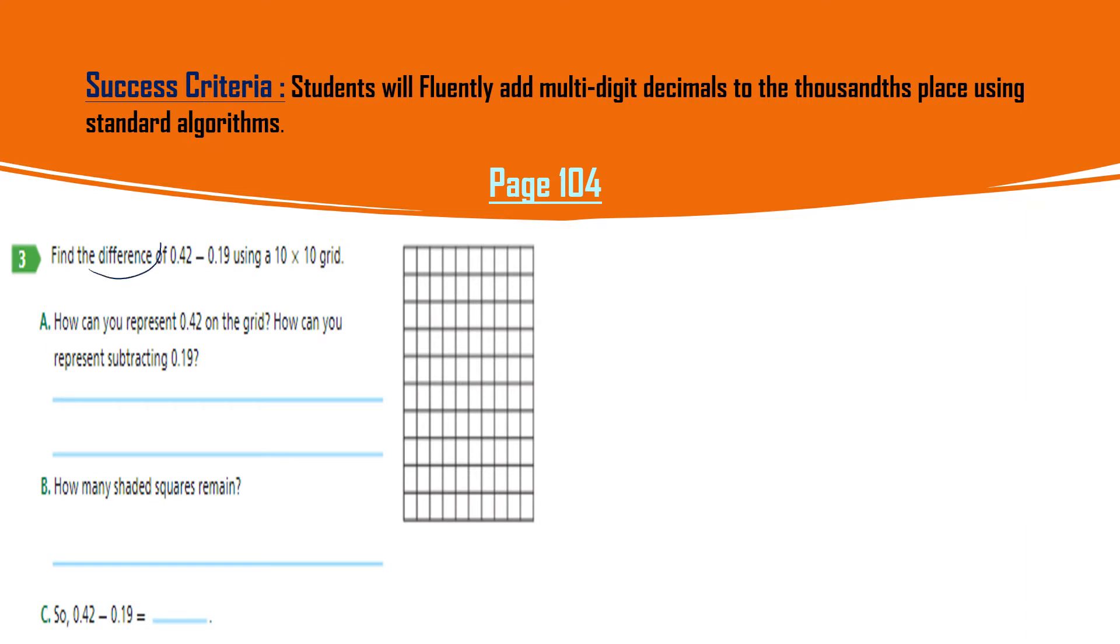Find the difference - difference means subtract: 0.42 minus 0.19 using a 10 by 10 grid. Let's try 0.42. This is the grid having one hundred small squares, and now 0.42 means 42 small squares you have to color. So this is 10 here, we have 20, then we will color 30, then we will color 40, and here one and two. So 42 you already colored. I will just show like this, so you color in the proper way, but I don't have the time so I am not coloring in this way.